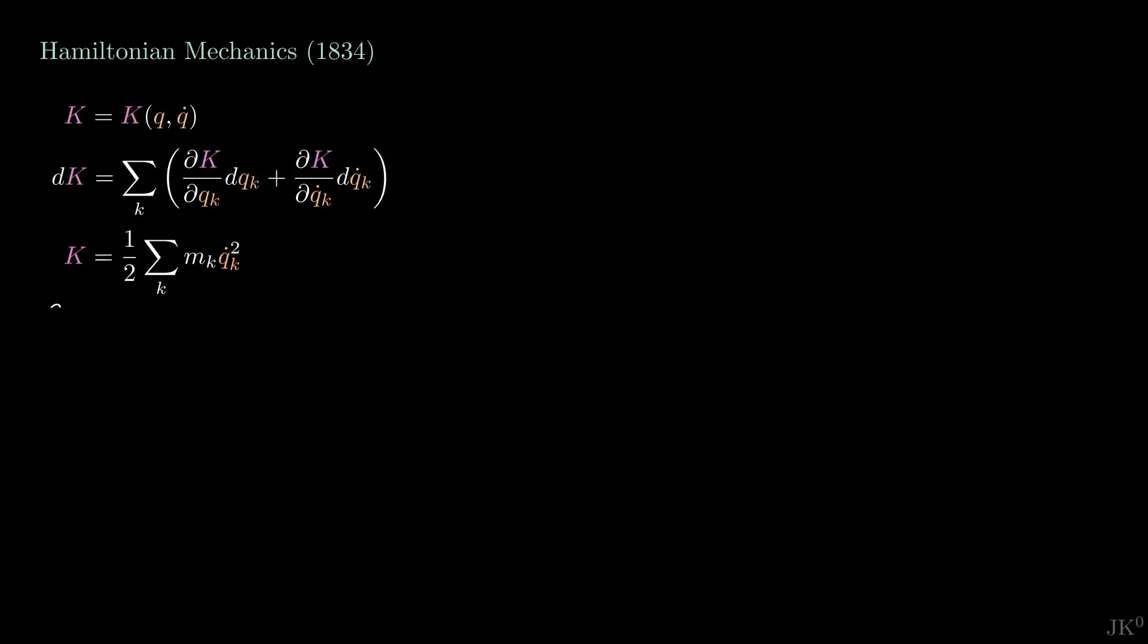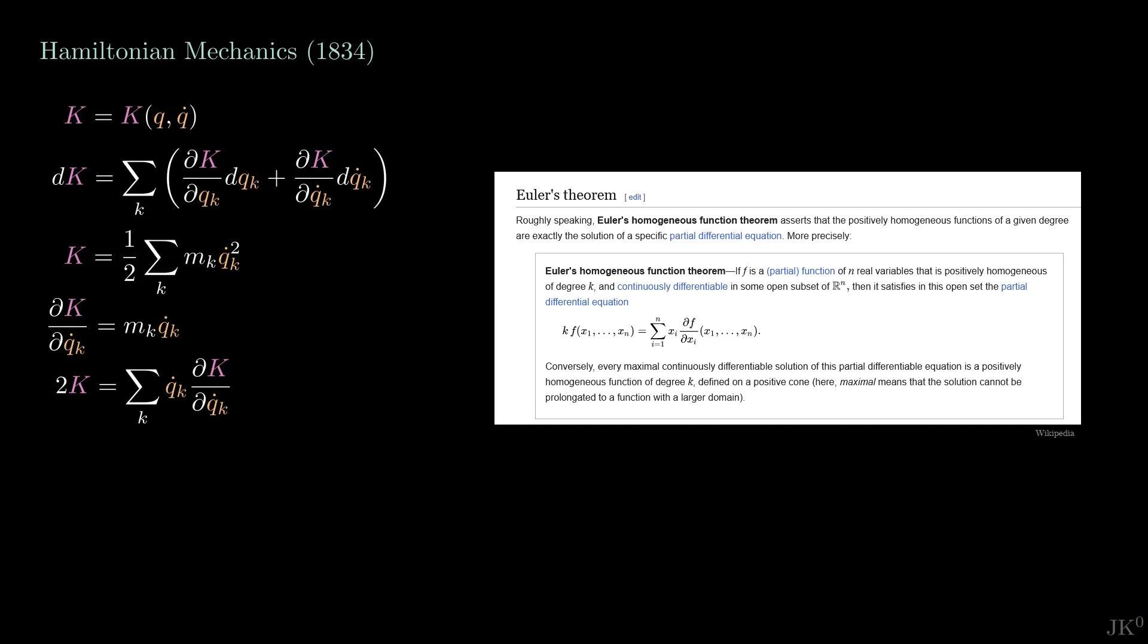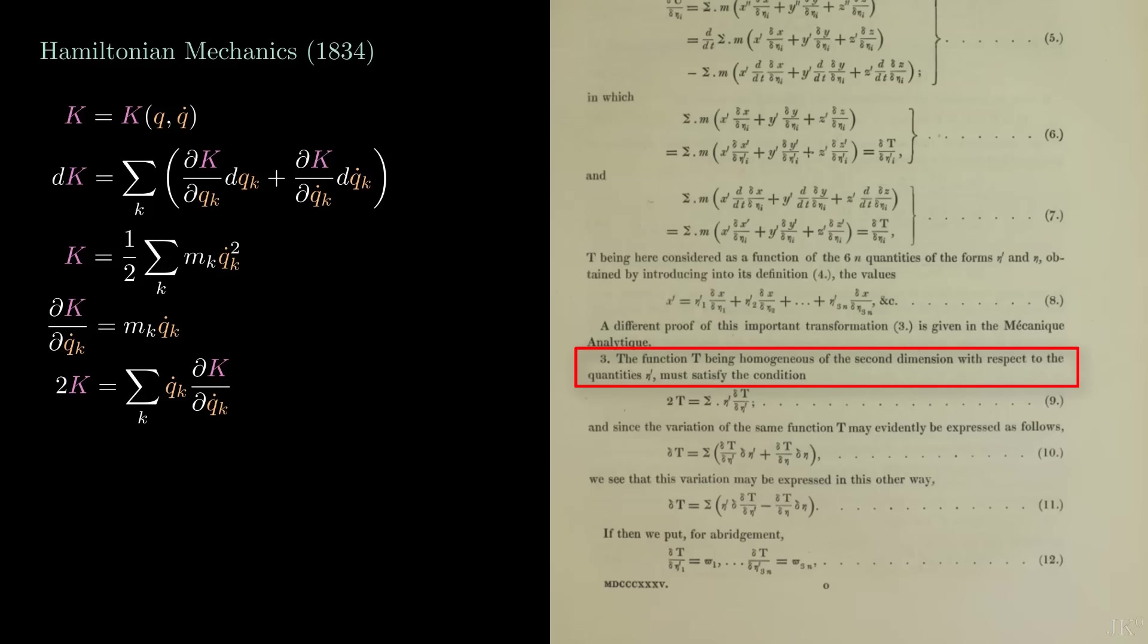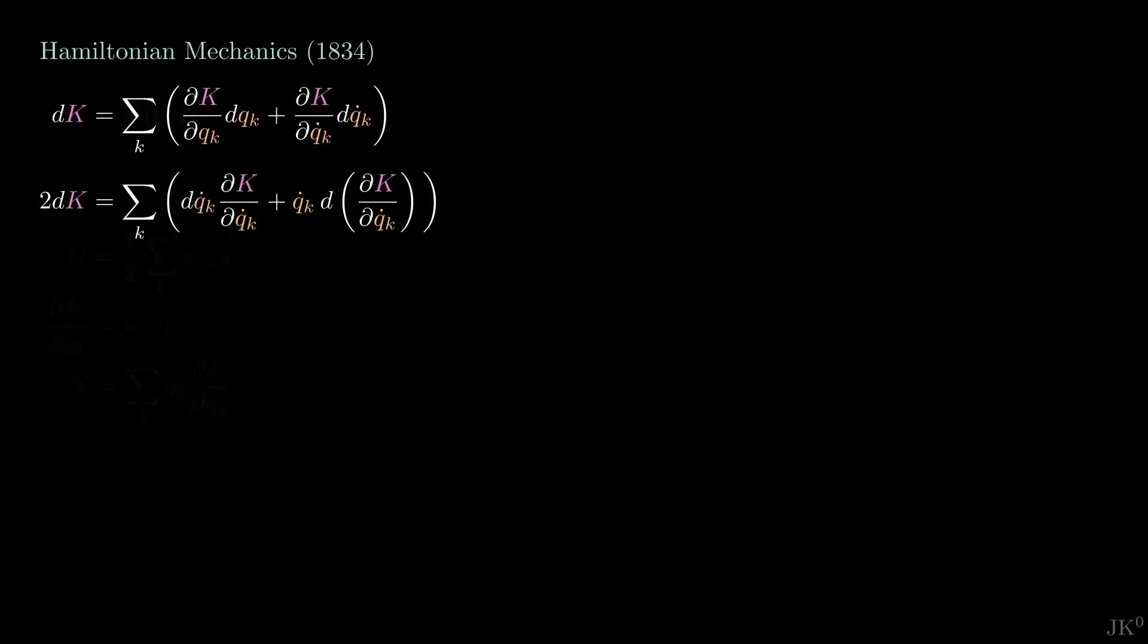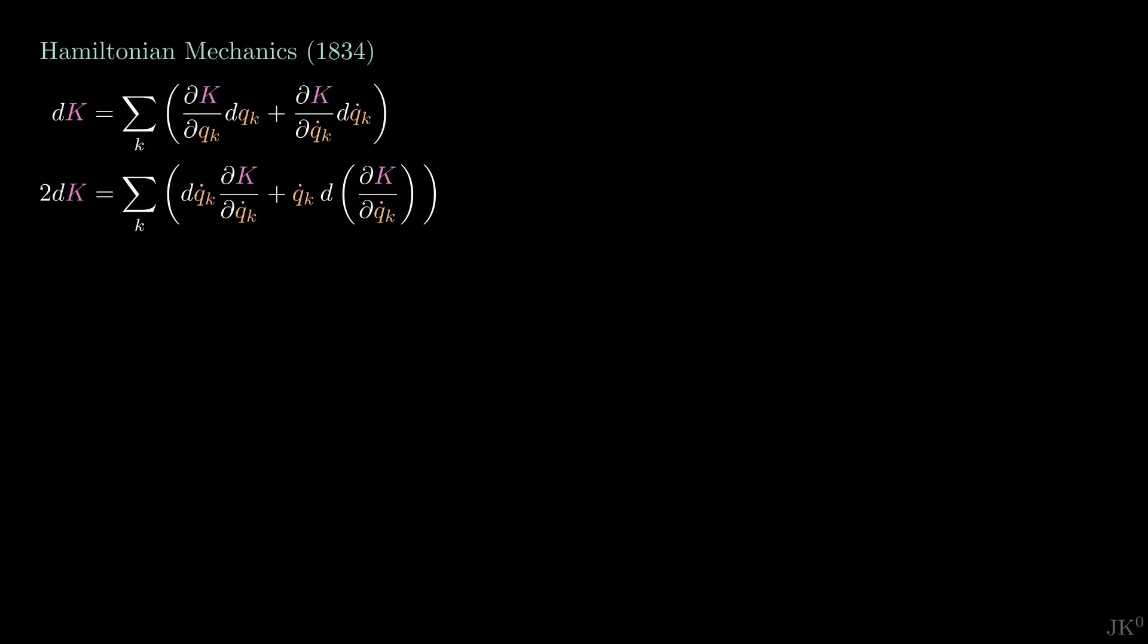In equations, he is stating that the kinetic energy is proportional to q-dot squared. Now let's take the derivative of this. Solving for q-dot and plugging it in the previous equation, we notice that the kinetic energy can be written in terms of its own derivative. Mathematicians will immediately recognize this expression as a particular case of Euler's homogeneous function theorem. This is what Hamilton was referring to in this line. The differential of this expression becomes this sum of terms. Taking the difference of these two expressions, we get the following.